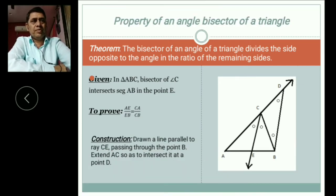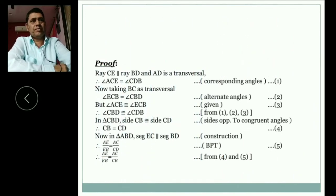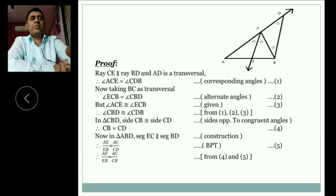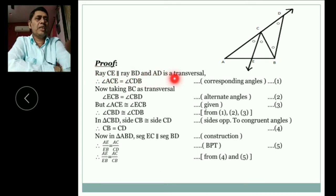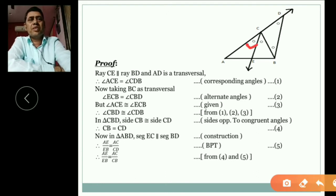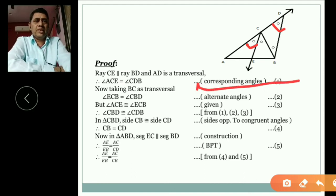But how to write proof? We write proof. In a proof, first upon we write: Ray CE parallel to ray BD and AD is transversal. So ray CE parallel to ray BD and AD is transversal. So angle ACE is equal to angle CDB. This is corresponding angle.